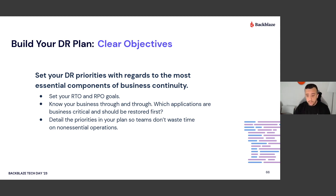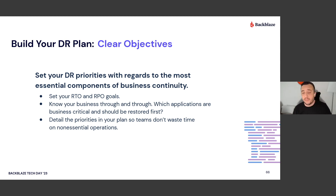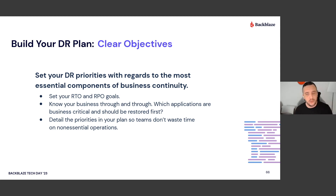You should have clear objectives. RTO — recovery time objective — defines how long your company needs to get recovered from a disaster. Depending on the type of business, this can be minutes, hours, or days. Most folks are probably in the 12-to-24-hour range if you're not sure where to start. But it really depends on the kind of business you're doing and what critical systems you need to get online.